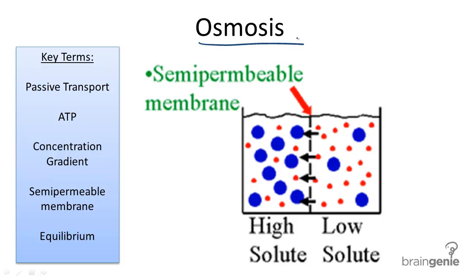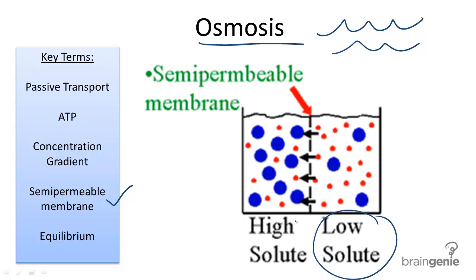Osmosis is the diffusion of water through a semi-permeable membrane from a low concentration of a solute to a high concentration of a solute. It is a type of passive transport. It involves diffusion, and it does not involve any transport proteins, since water can freely pass through the membrane — the phospholipid bilayer, to be specific.